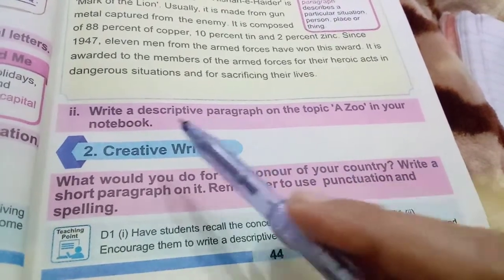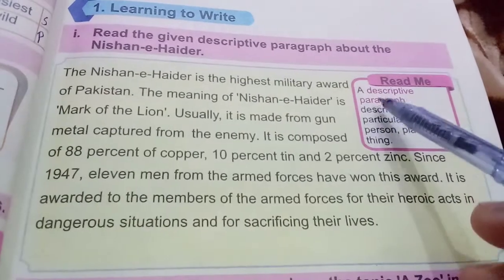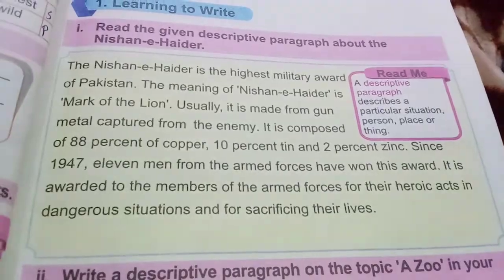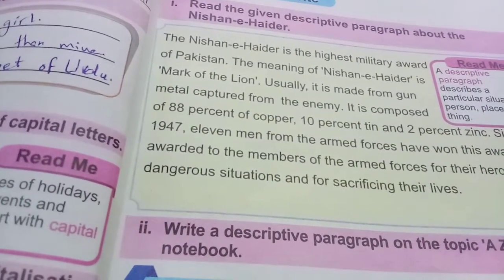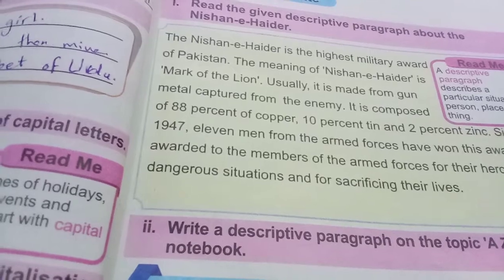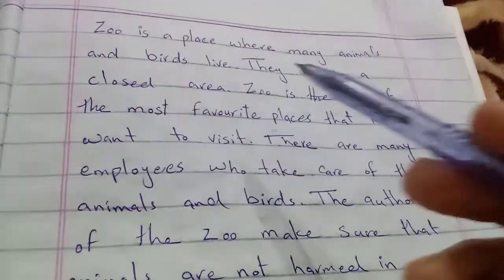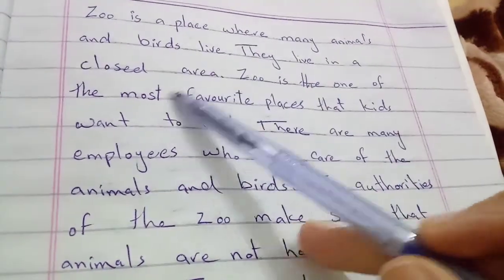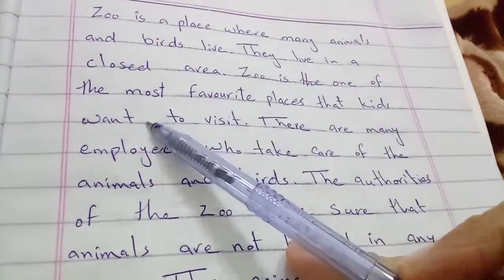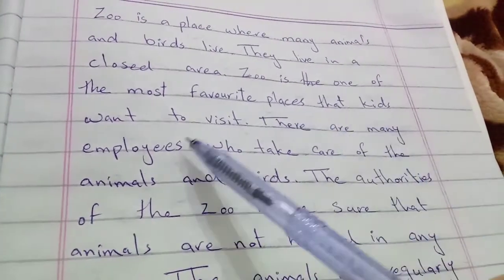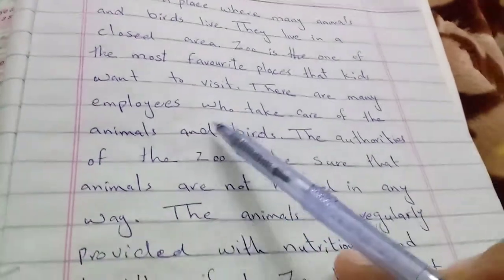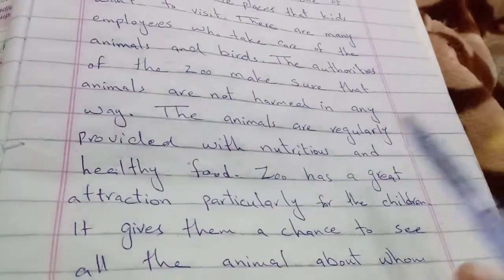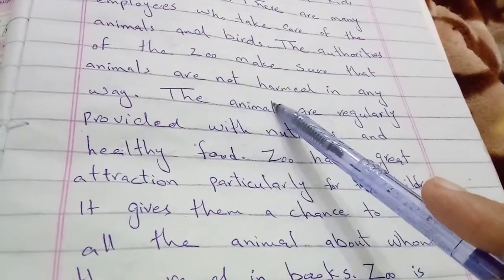Write a descriptive paragraph on the topic 'A Zoo' in your notebook. A descriptive paragraph describes a particular situation, person, place or thing. Zoo is a place where many animals and birds live. They live in a closed area. Zoo is one of the most favorite places that kids want to visit. There are many employees who take care of the animals and birds.